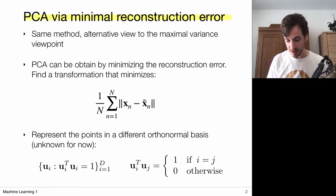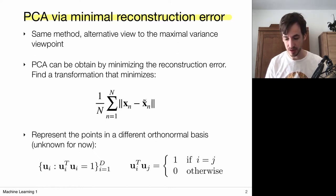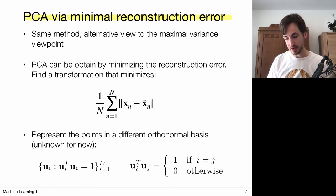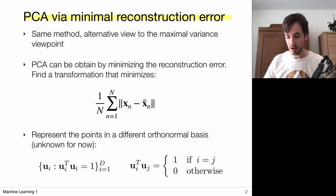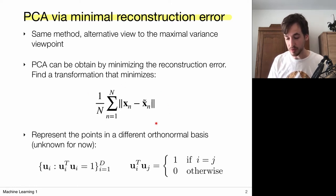It's important to also get familiar with this reconstruction error viewpoint because if you look at modern latent variable models, which are nowadays typically based on neural networks or deep neural network architectures, these are highly non-linear and they're typically trained or optimized by minimizing such types of loss functions.